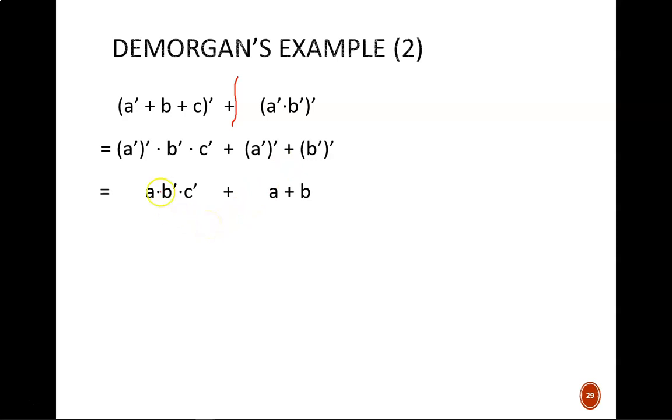This next line simplifies by eliminating all the double primes, and then we apply rule 10 to eliminate this term, resulting in the simplified expression A or B.